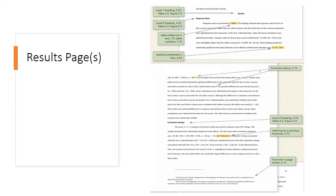Next are the results pages — something you won't be writing in this class; you'll actually write that in Psych 350. For Psych 250, you write the introduction and methods; in Psych 350, you'll write the results and discussion. Essentially, a results page describes what your study found — what statistics you calculated to answer your research question and hypotheses. It's all available in your APA textbook as well.